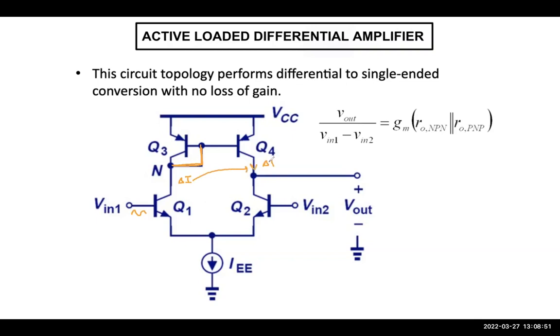So this becomes delta I. So this increase delta I reflects here because this is DC constant. So AC wise, this current flows here. This becomes delta I.